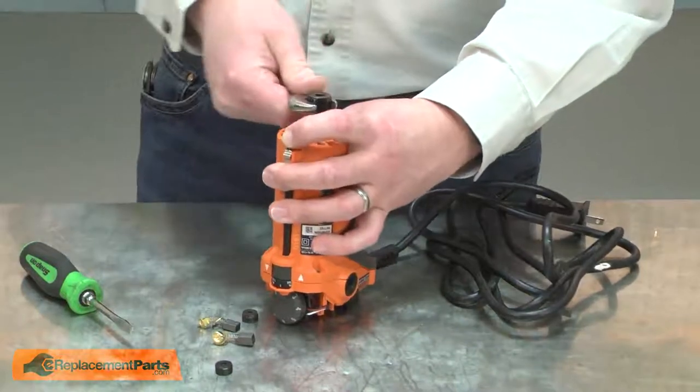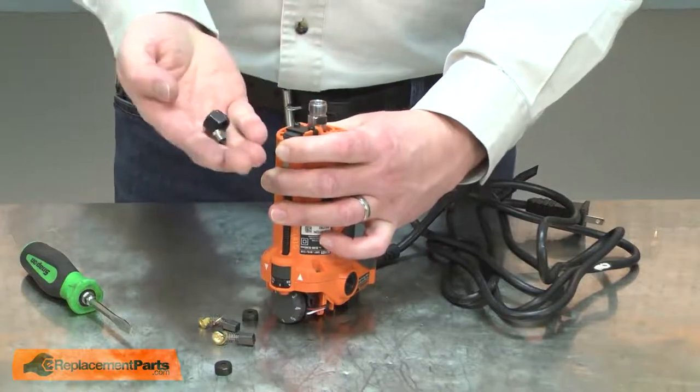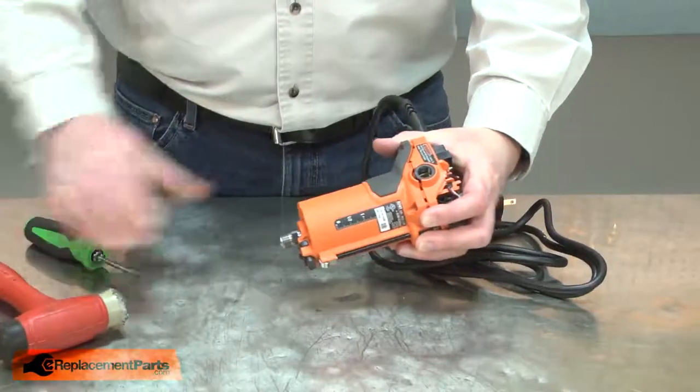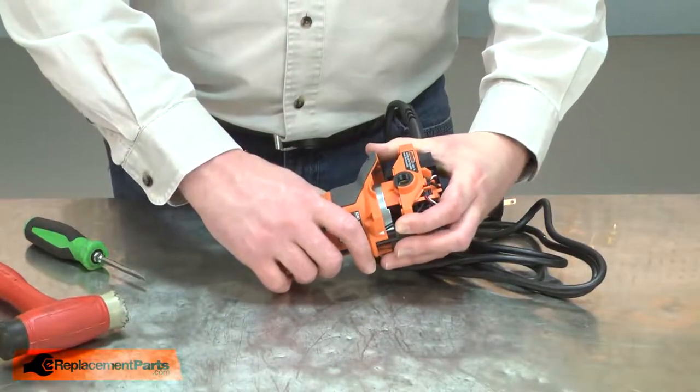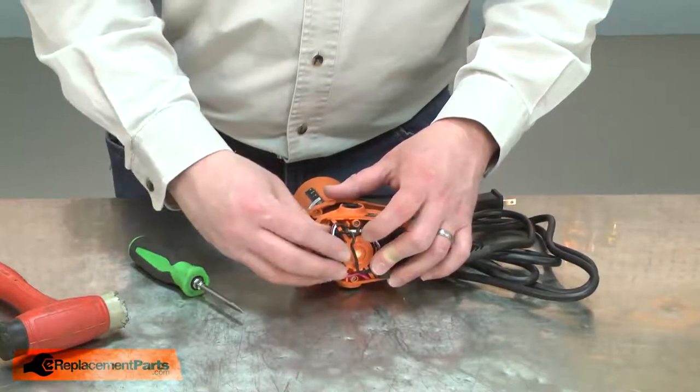Now I'll separate the two halves of the motor housing and remove the armature. I'll need to disconnect the LED light wire.